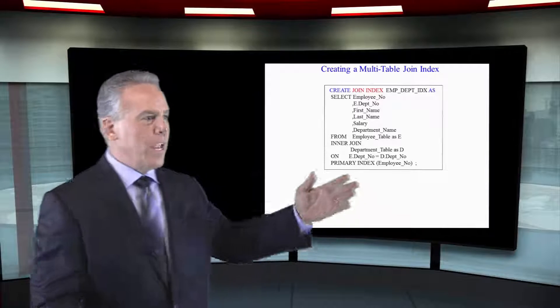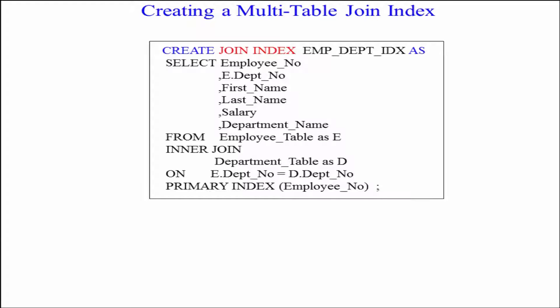Now, here we have a multi-table join index. If you were to take off the first line that says create join index, I give it a name, as, and then you've got what is a typical join. That's the way a join index is built.